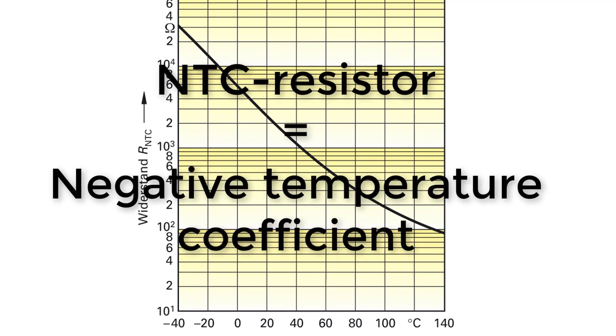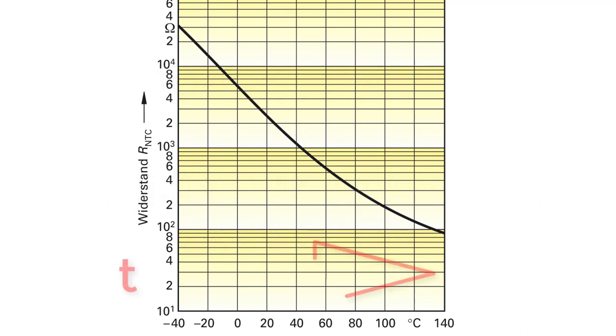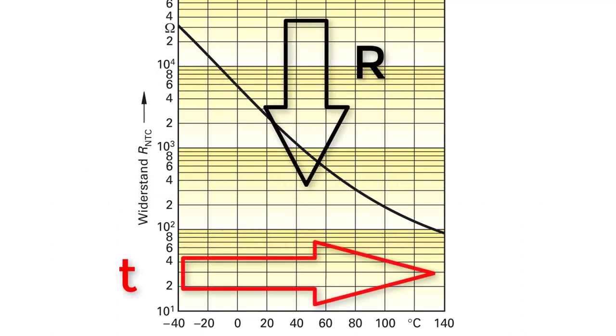A negative temperature coefficient means that the resistance decreases as the temperature increases. Analogous to the resistance, the voltage drop at the NTC decreases with increasing temperature.